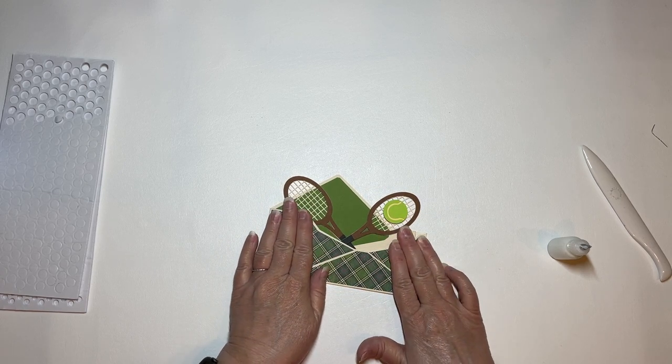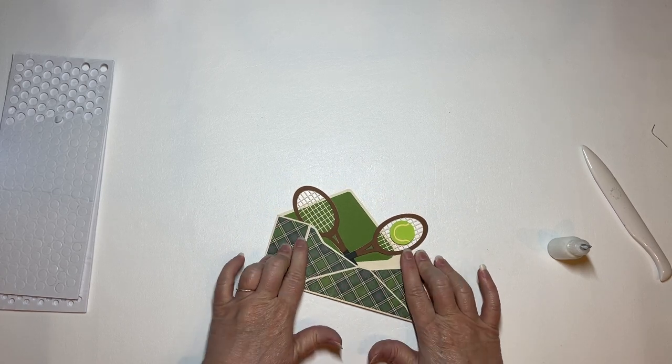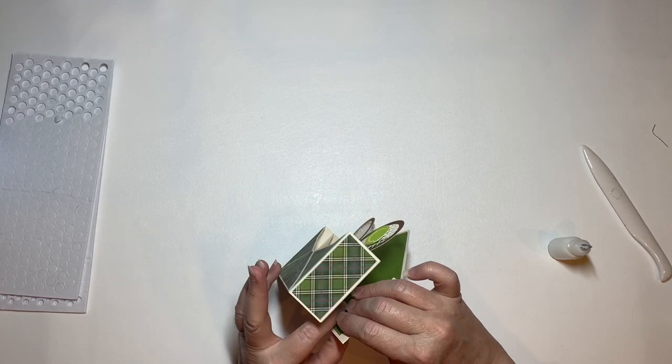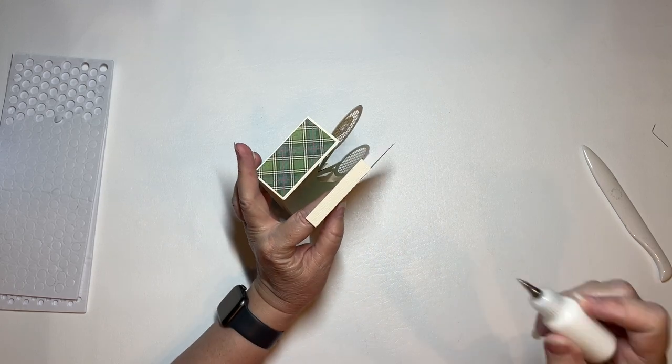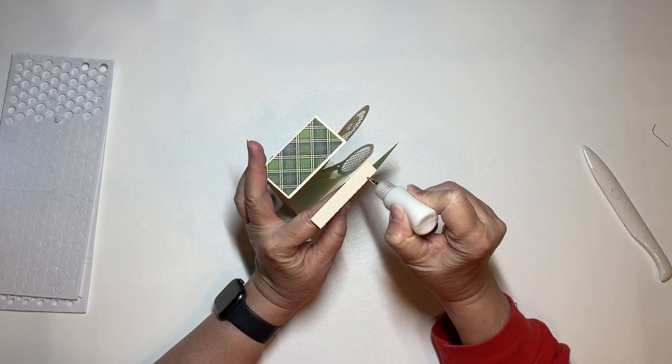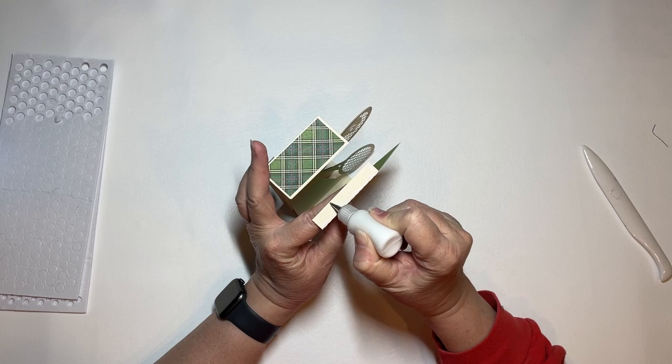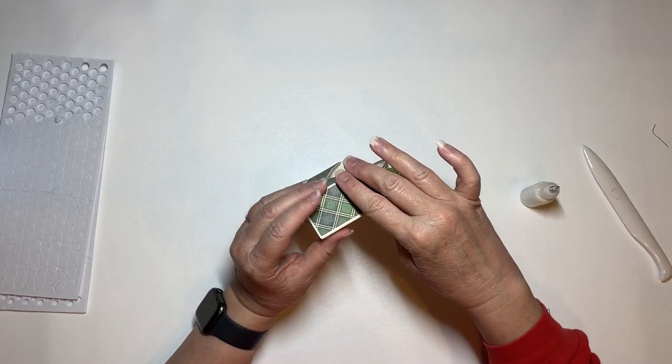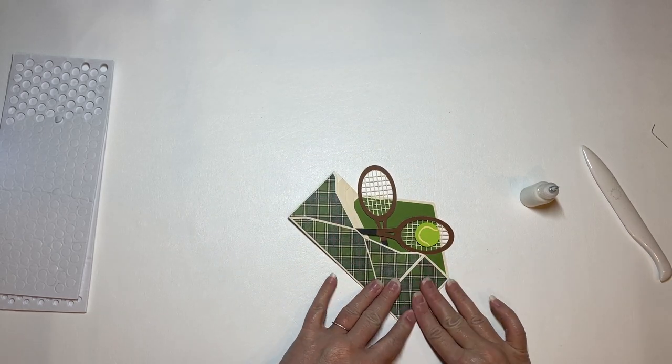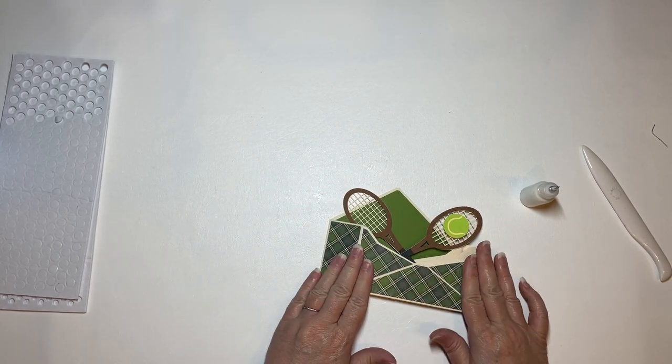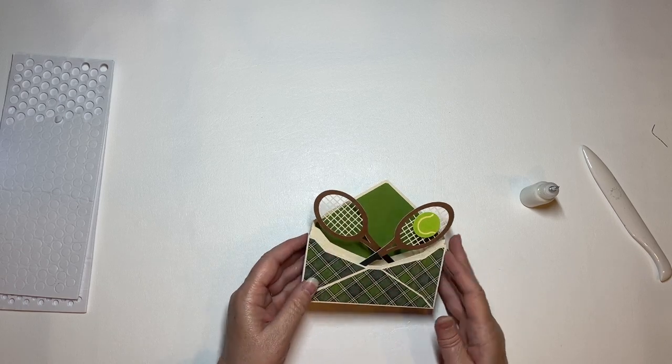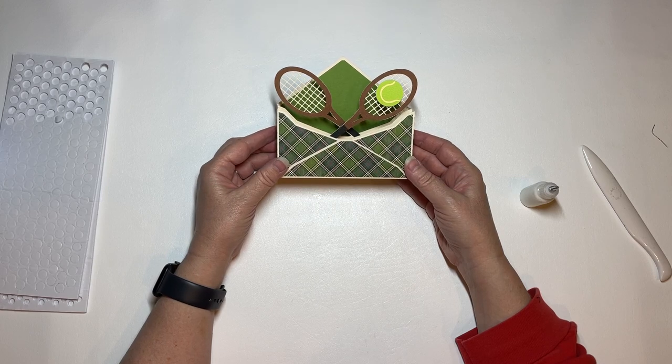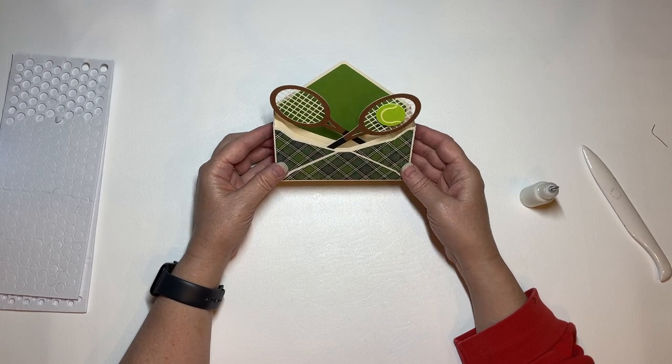Fold it the other way, so we're training the card both ways, and then we're going to glue it shut. And there is your tennis envelope box card.